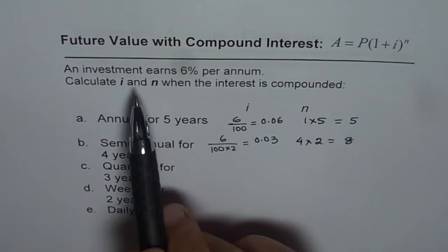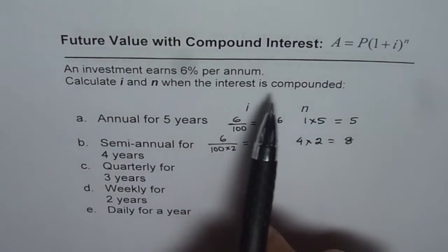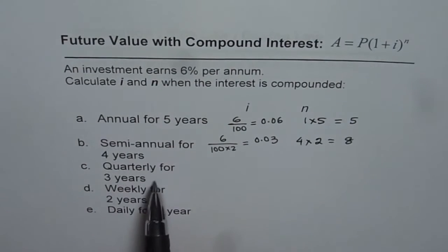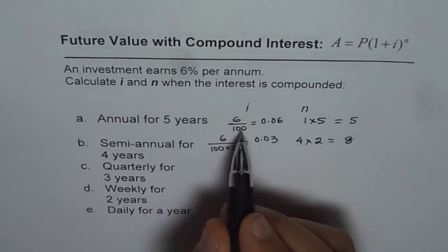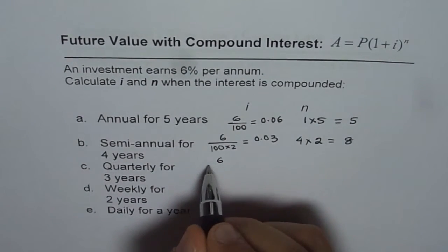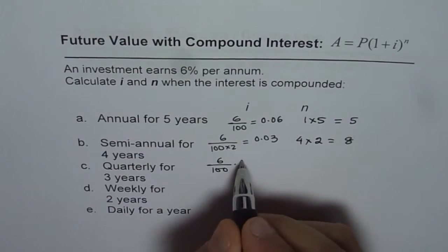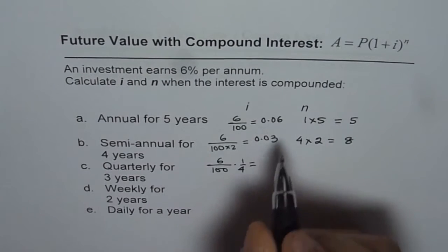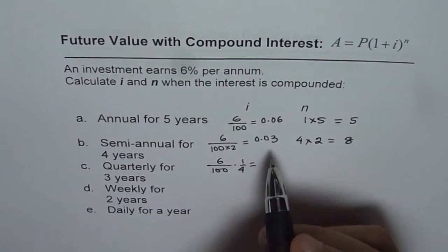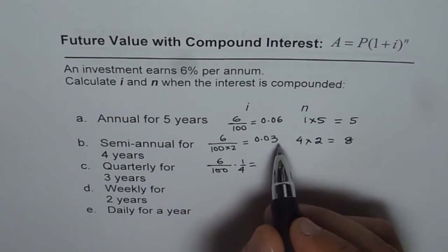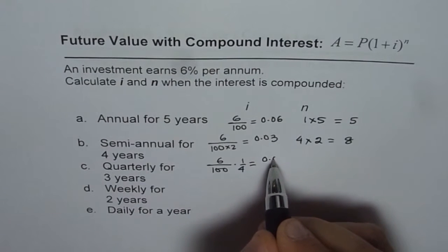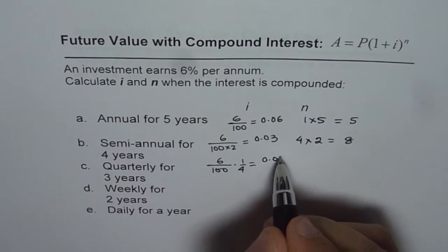Part C is investment earns 6% per annum compounded quarterly for 3 years. Quarterly means you have to divide this by 4. 6% per annum, that means 6 over 100. Quarterly means 1/4th of this. So you have to do 1/4th of this. 1/4th will be 0.015 of this.